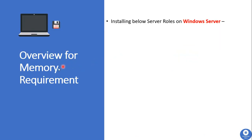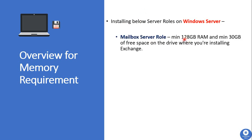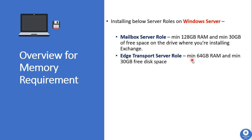Now we will see memory requirements for installing Exchange Server 2019. The Mailbox Server role requires a minimum of 128 GB of RAM and a minimum of 30 GB free disk space on the drive where Exchange is being installed. The Edge Transport Server role requires a minimum of 64 GB of RAM and a minimum of 30 GB of free disk space on the installation drive.